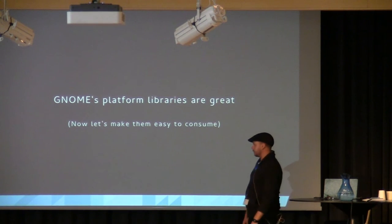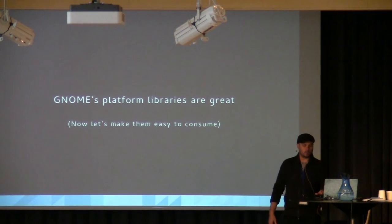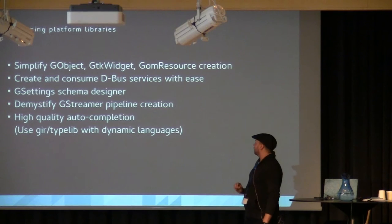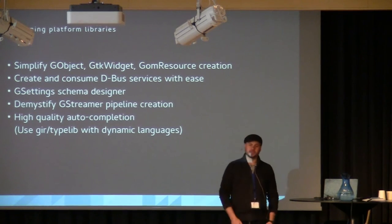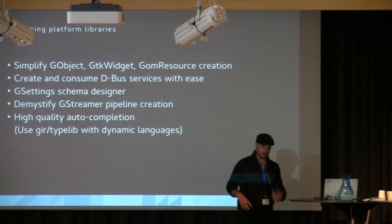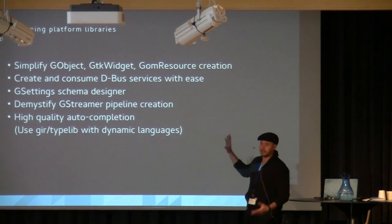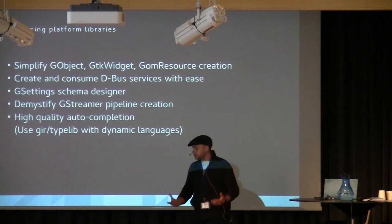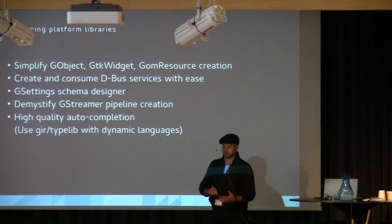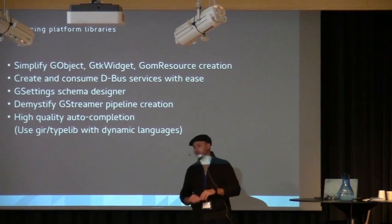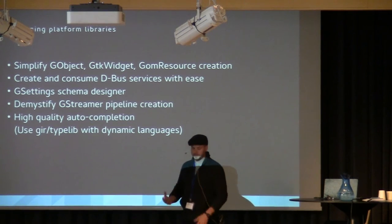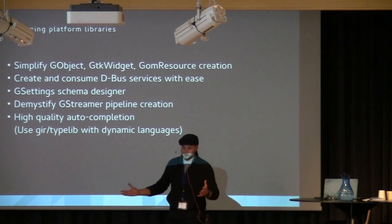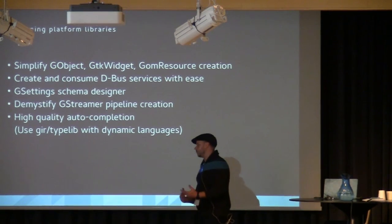We also have fantastic platform libraries — GStreamer, GTK, GObject. We can make it easy for people to consume these. In Builder, we're looking at doing helpers to create important objects in our ecosystem. If you want to create a GTK widget, it'll take care of creating source files, UI files, plugging everything together. If you want to make a GOM resource — a SQLite front end, equivalent to something like Core Data on other platforms — it'll help you design your schema. Creating and consuming D-Bus services is interesting because we have D-Bus services everywhere, but it's really difficult to say 'I want to connect to the account service and manipulate some things' — when really we can just let you browse the service on the bus and generate the code for you. GStreamer pipelines are always hard to figure out the right incantation for, so auto-completion there as well.